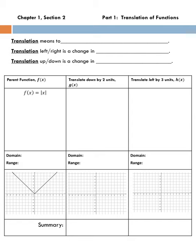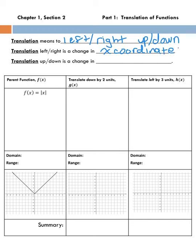So translation means to move left, right, or up, down, or both at the same time — so you could be moving diagonally as well. When we translate left or right, we're changing the coordinates in the x dimension. And likewise, when we're going up and down, we are changing coordinates in the y dimension.